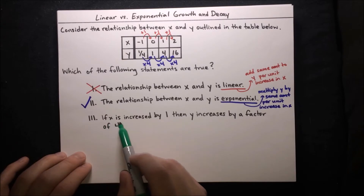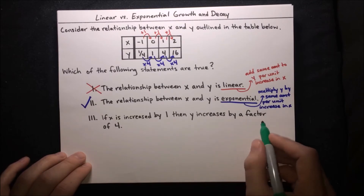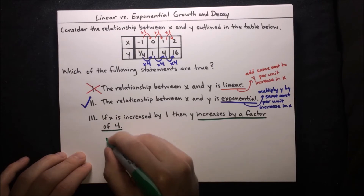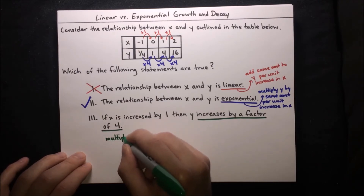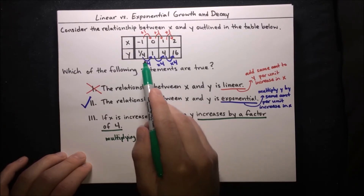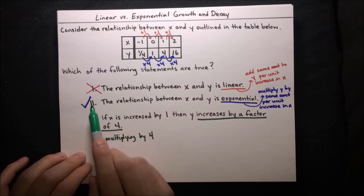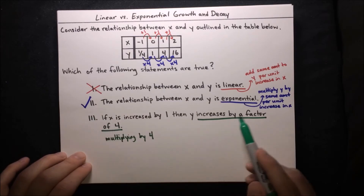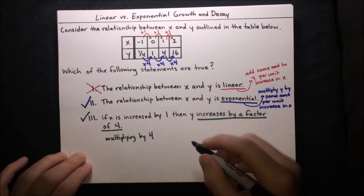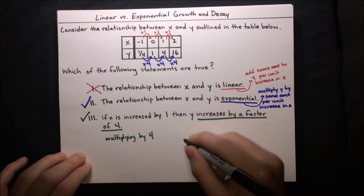Statement 3: if x is increased by 1, then y increases by a factor of 4. Increasing by a factor of 4 means multiplying by 4. We already saw in statement 2 that every time we increase x by 1, we multiply y by 4. So yes, statement 3 is also true. Going through all the statements, only 2 and 3 are true.